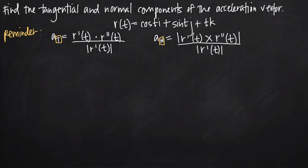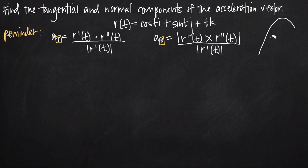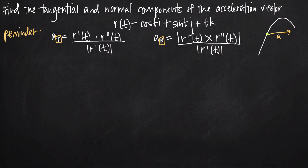Let's talk about what we mean when we're saying tangential and normal components of an acceleration vector. If we have a curve that models the motion of an object through space, the acceleration vector of this particle at a particular point can be broken down into two components: the tangential component and the normal component. The tangential component is along the line of the unit tangent vector, and the normal component is along the line of the unit normal vector. The unit tangent vector gives the direction of motion, and the unit normal vector gives the direction that the curve is turning.